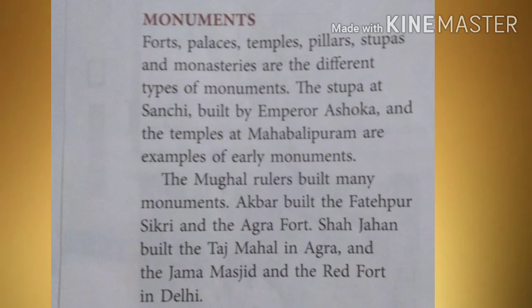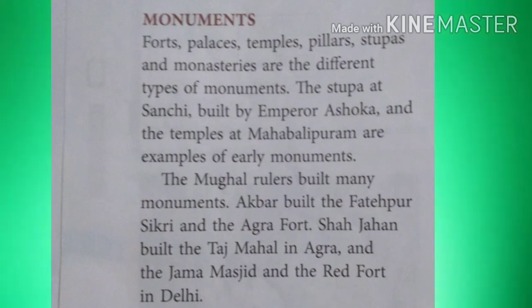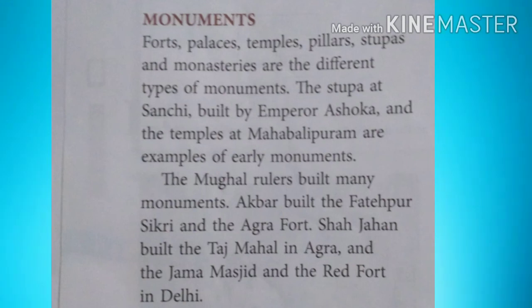The Mughal rulers built many monuments. Akbar built the Fatehpur Sikri and the Agra Fort. Shah Jahan built the Taj Mahal in Agra, and the Jama Masjid and the Red Fort in Delhi. The Portuguese built many monuments in Goa. The British built the Rashtrapati Bhavan and the Parliament House in Delhi, and the Victoria Memorial in Kolkata.